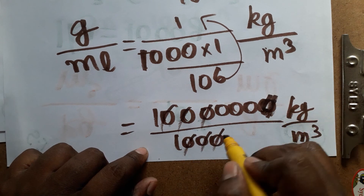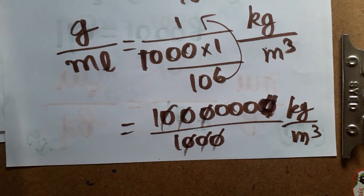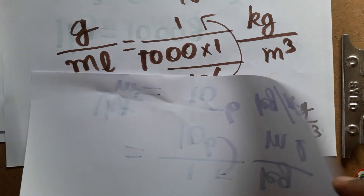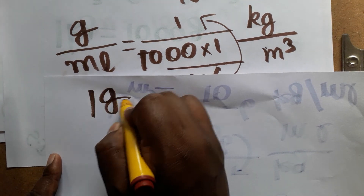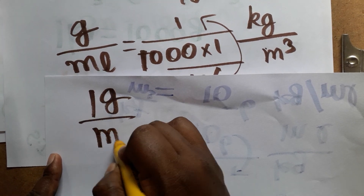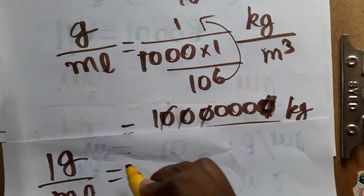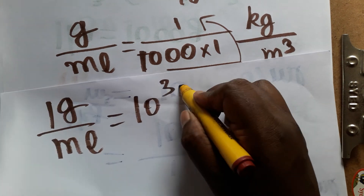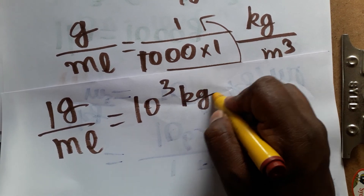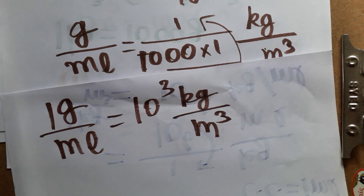Finally, we got: 1 gram per mL is equal to 10 power 3 kg divided by meter cube. Thank you for watching.